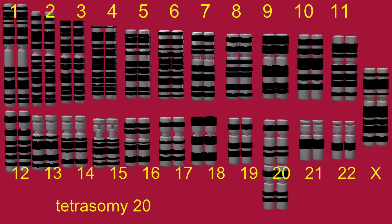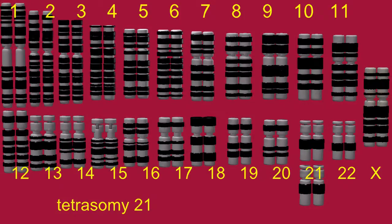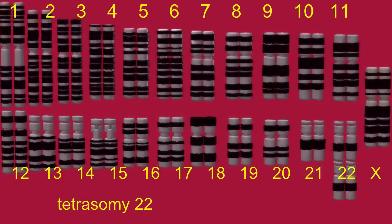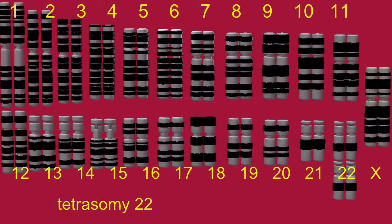Tetrasomy 20 indicates that there are four copies of chromosome 20. Tetrasomy 21 indicates four copies of chromosome 21. Tetrasomy 22 indicates four copies of chromosome 22.